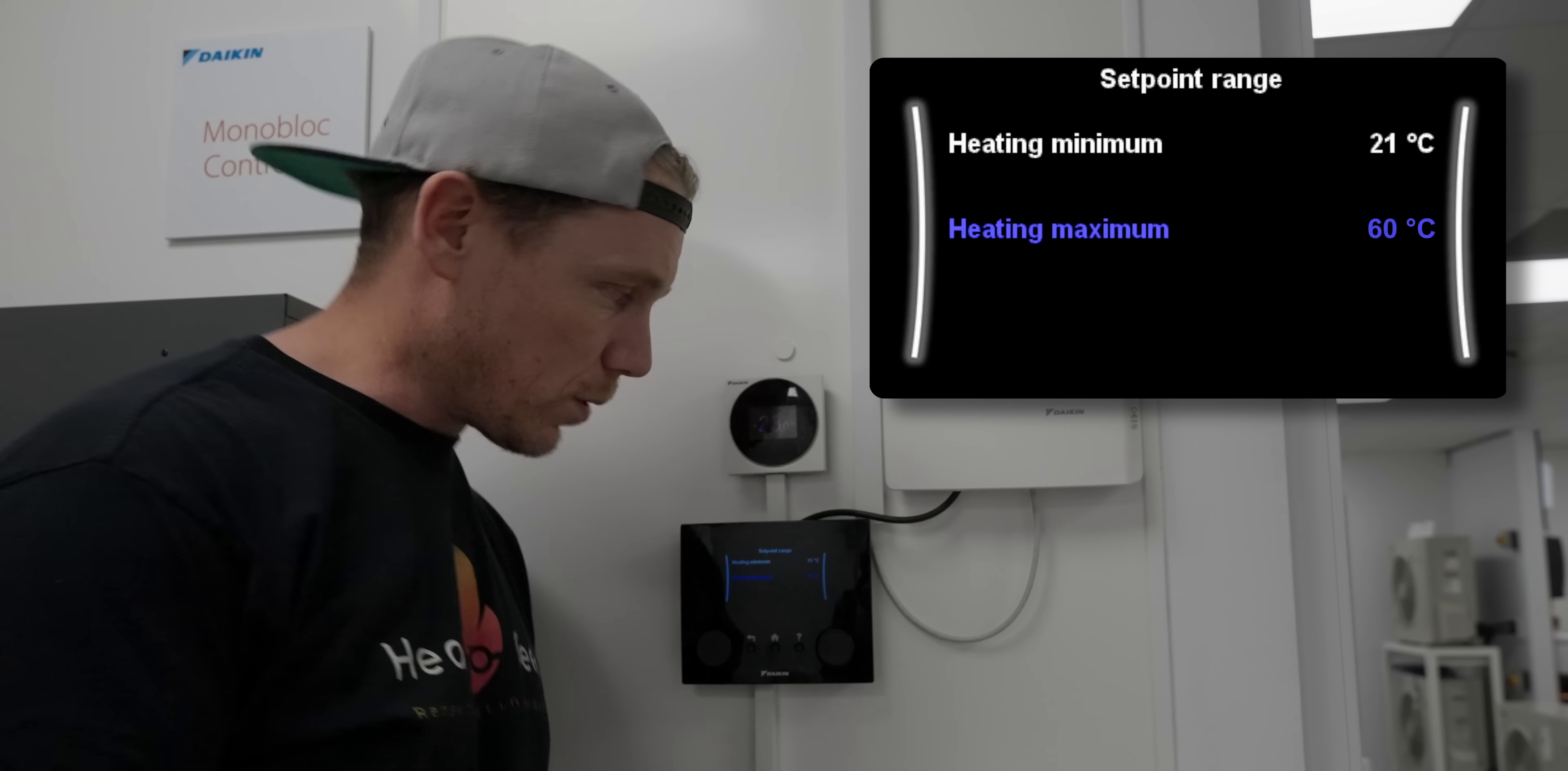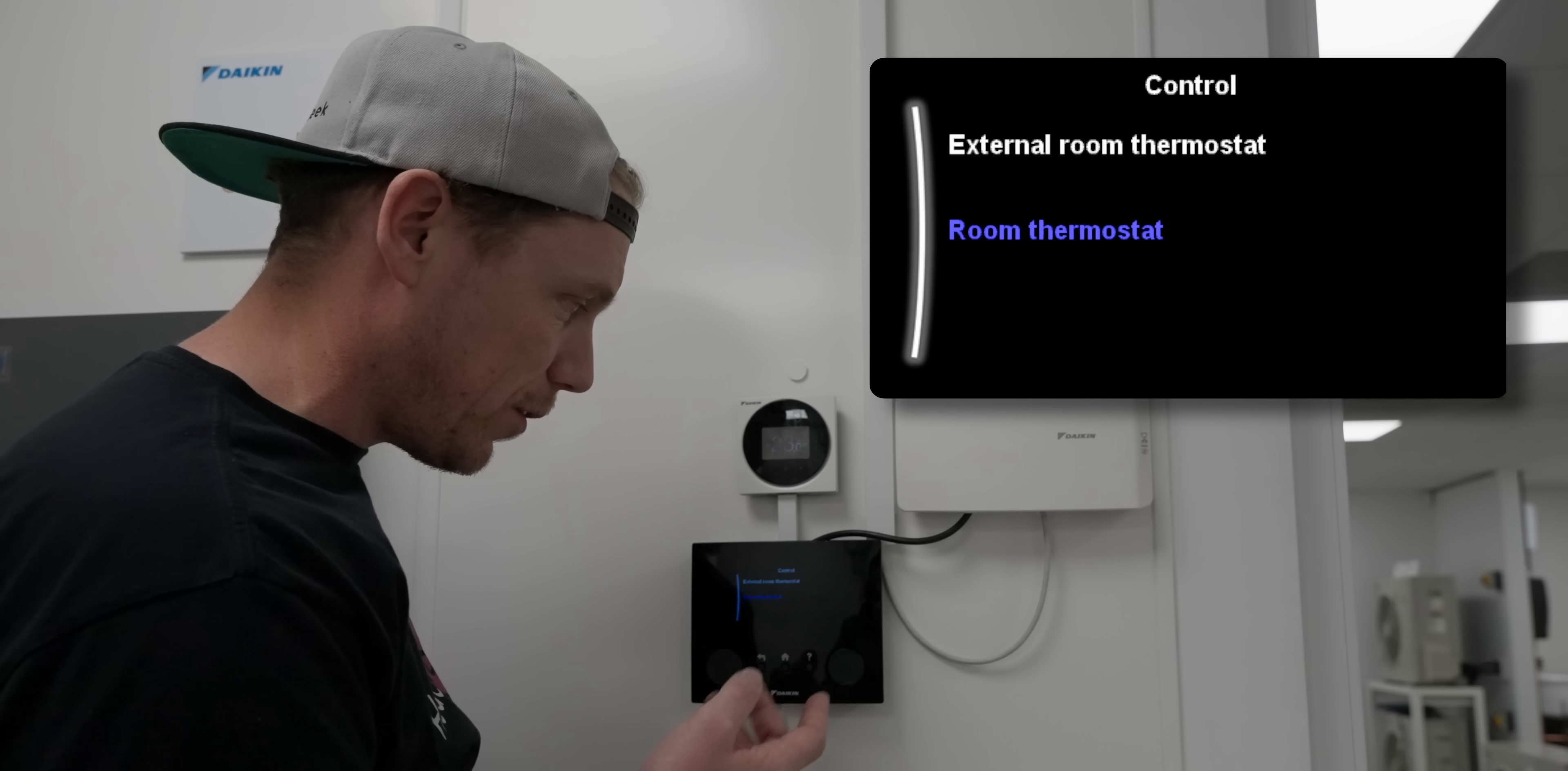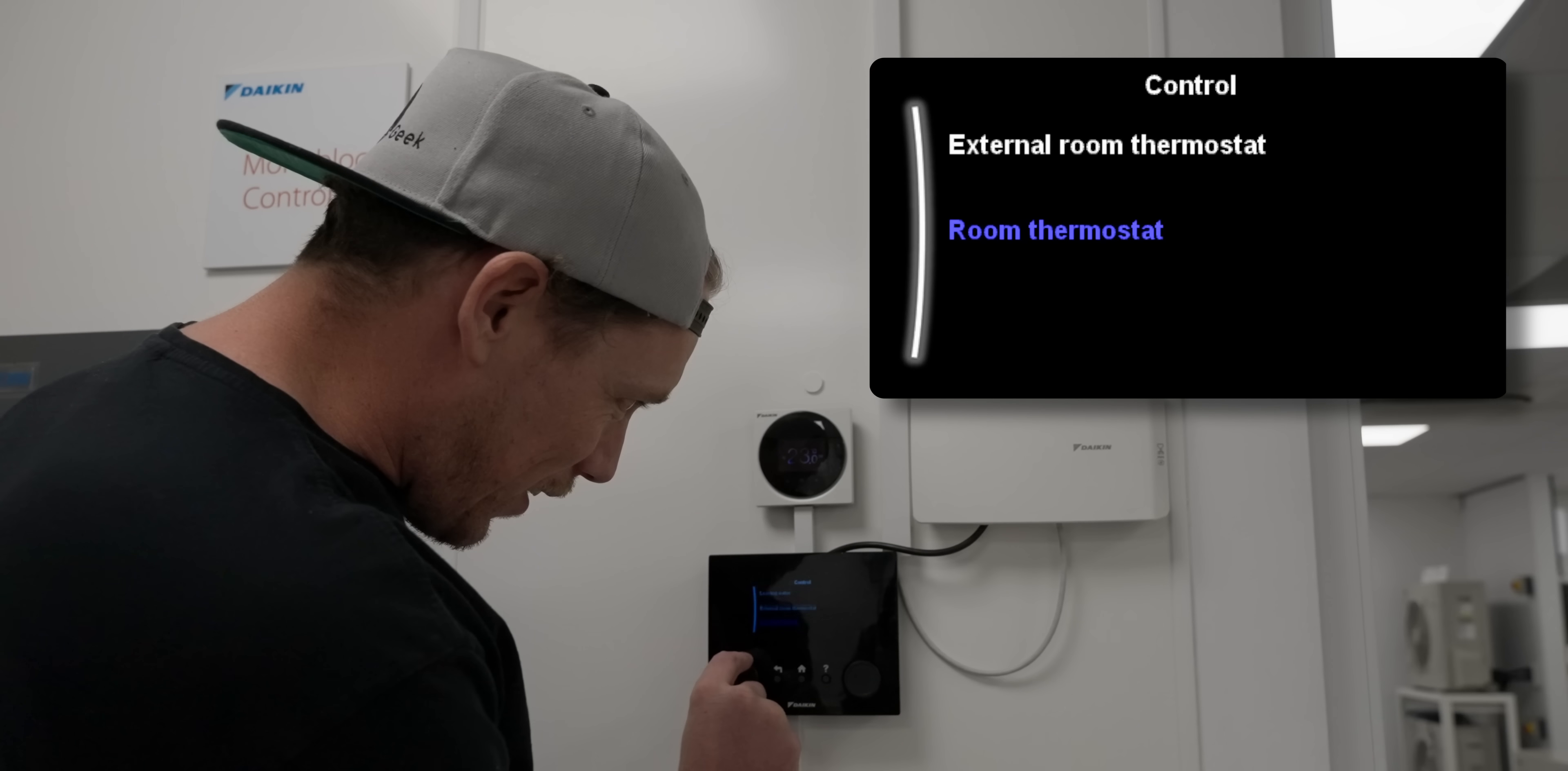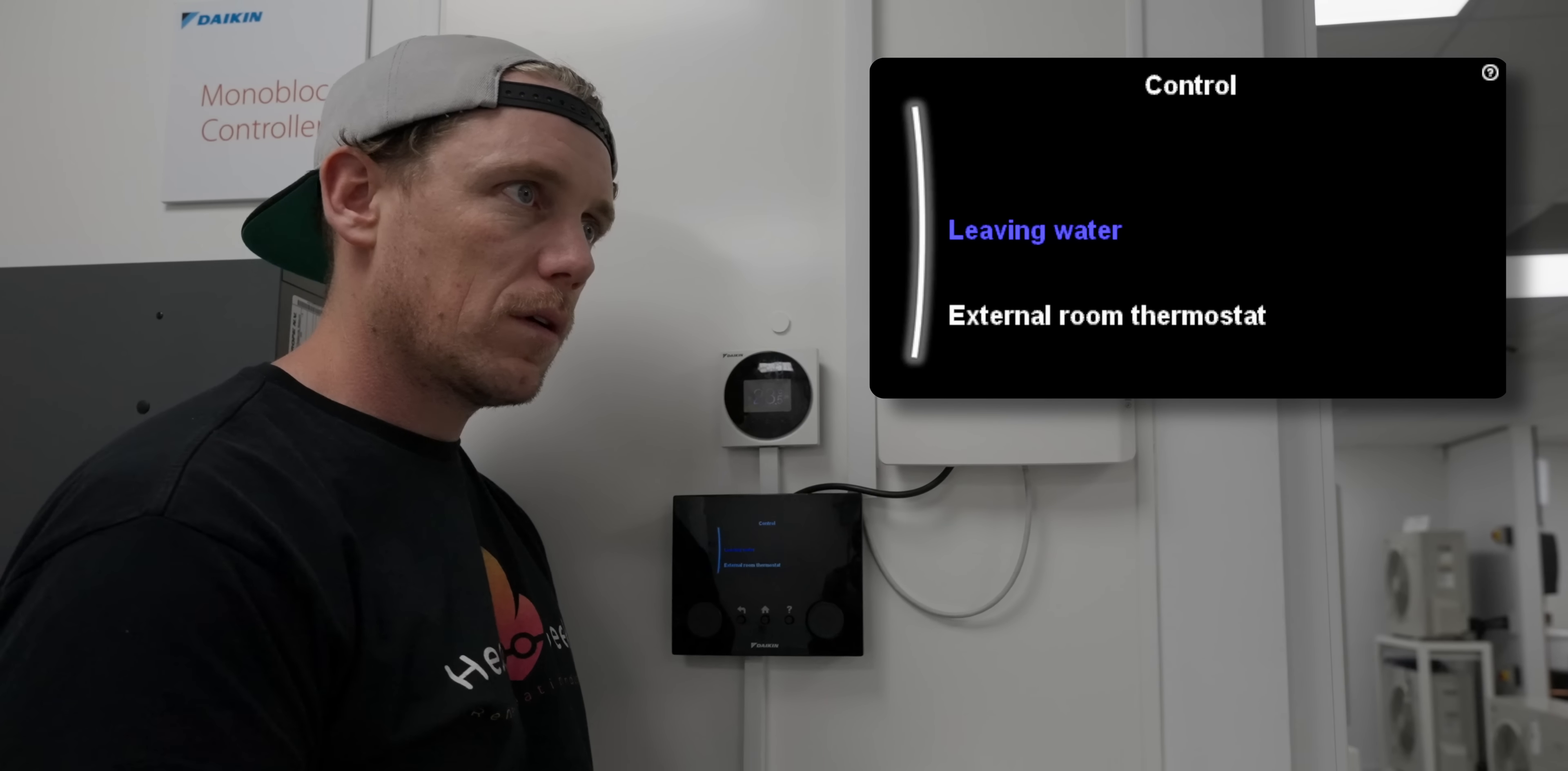Next one is control. We've got external room thermostat, which means just a third party room thermostat, which you never want with a heat pump. If you have got that, that's fine, but to get maximum efficiency we want to use Daikin controls on Daikin's main MMI. So we don't want to use external room thermostat, we want to use a room thermostat, an installed room thermostat is going to be more intelligent control.